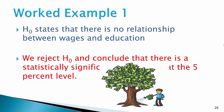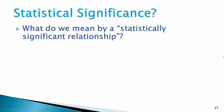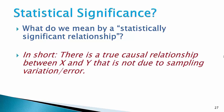This means that the more education a person has, on average they should accrue a higher hourly wage. What do we mean by a statistically significant relationship? In short, it means that there is a true causal relationship between x and y that is not simply due to sampling variation or sampling error — it's a true relationship between x and y.